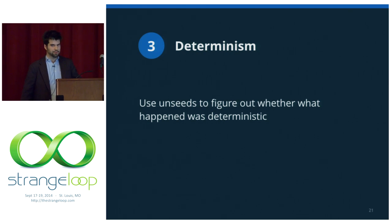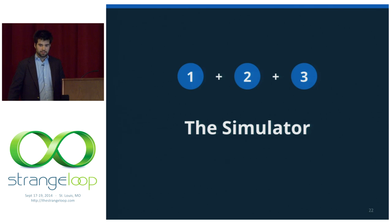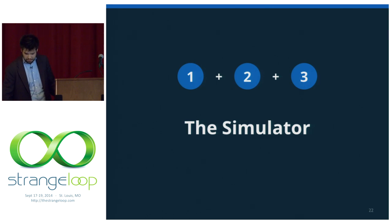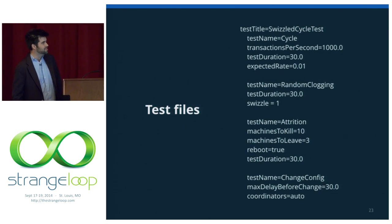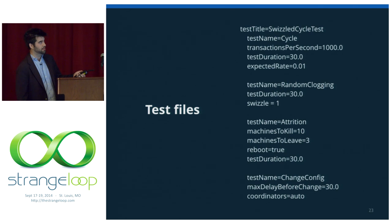So you roll those three things together — and you have something which can take a network of interacting processes and simulate them together in a totally deterministic way. That's where the fun begins. Because the fun part is now we need to find bugs. And so the way we do that is with these test files. These test files declare two types of things: one is a set of stuff that the system is going to try and achieve, and the other is a set of stuff that's going to try to prevent it from achieving that.